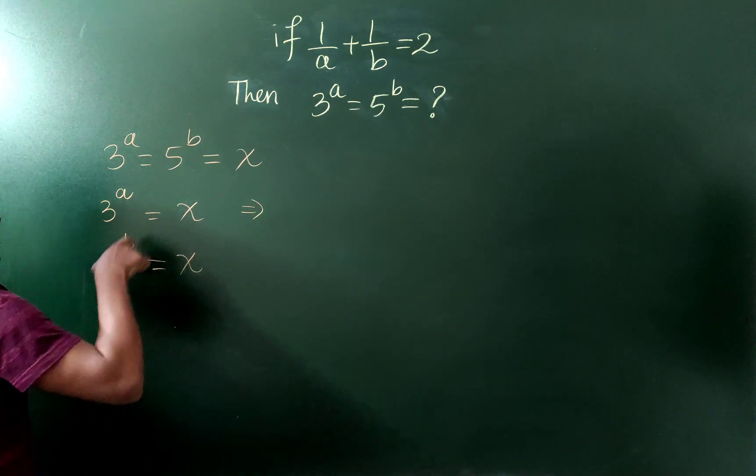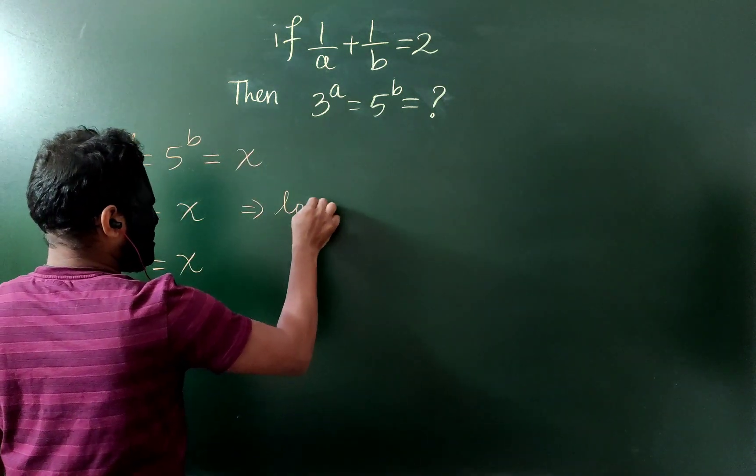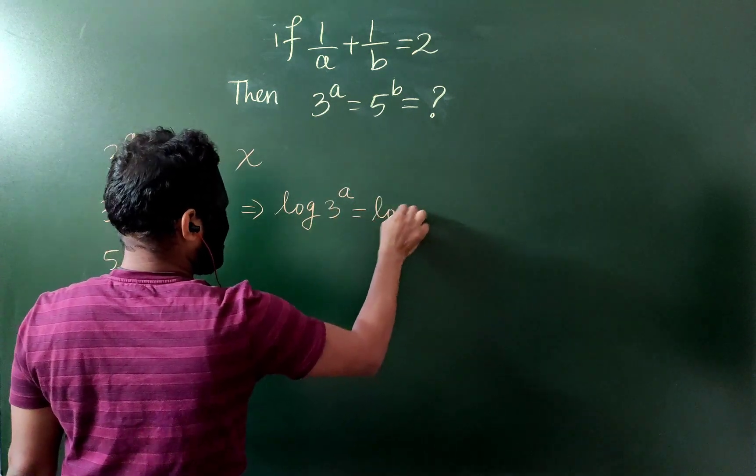why, because we want a and b value. So if I take log both sides, then log 3^a equals to log x,